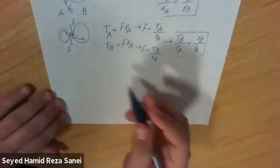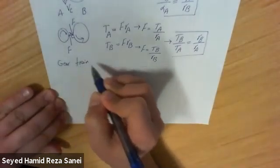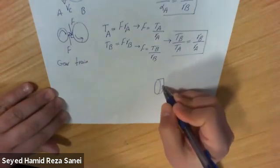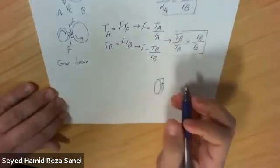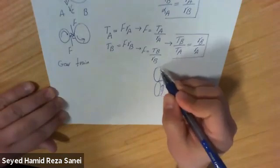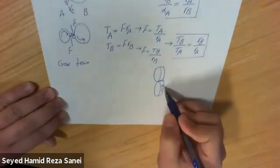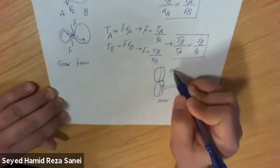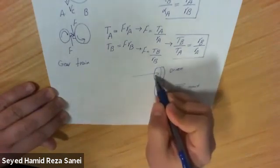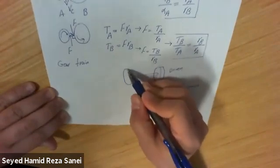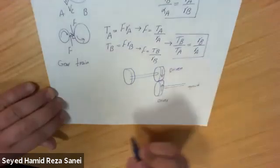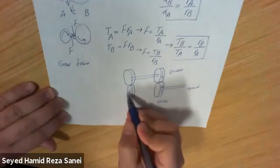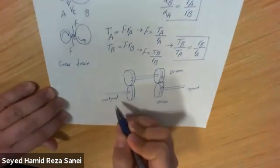Sometimes more than one gear is in contact, and then we call this a gear train. Say we have a gear here rotating in a given direction, in contact with another gear. The first gear is the input, which we call the driver gear, and the second is the driven gear. The driven gear is connected to an intermediate shaft, which then connects to another gear set, and so on, until we reach the output.